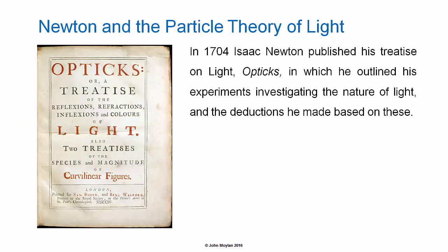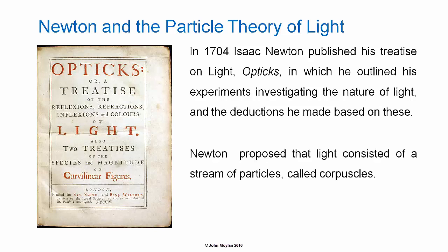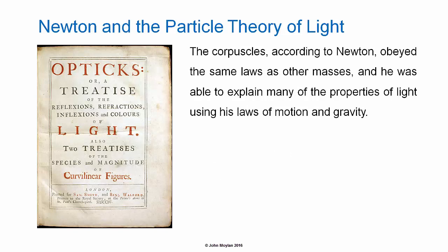Newton and the Particle Theory of Light. In 1704 Isaac Newton published his Treatise on Light, Optics, in which he outlined his experiments investigating the nature of light, and the deductions he made based on these. Newton proposed that light consisted of a stream of particles, called corpuscles. The corpuscles, according to Newton, obeyed the same laws as other masses, and he was able to explain many of the properties of light using his laws of motion and gravity.